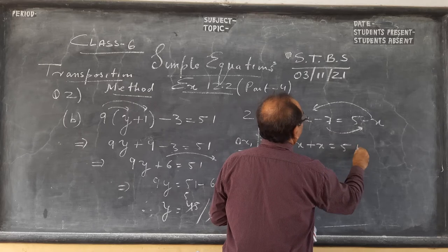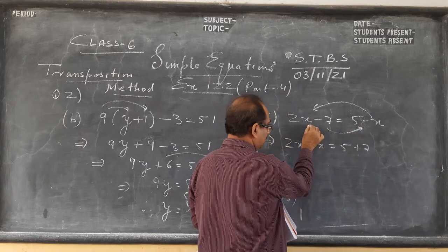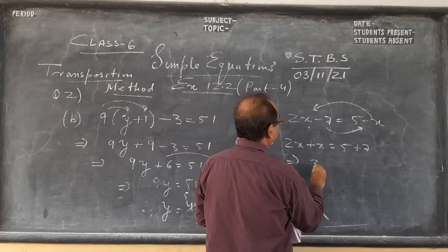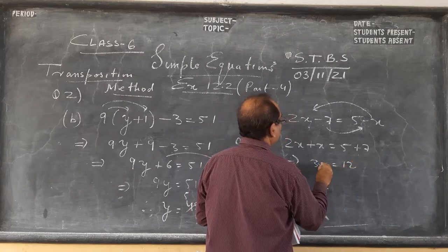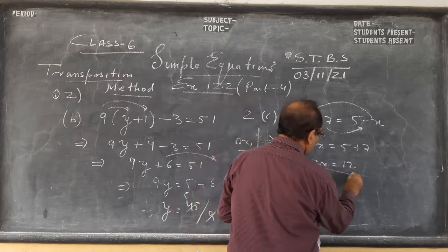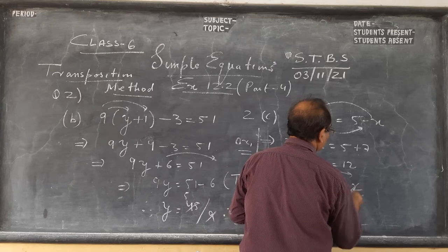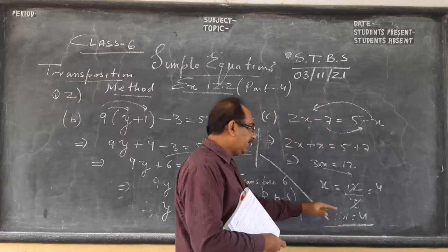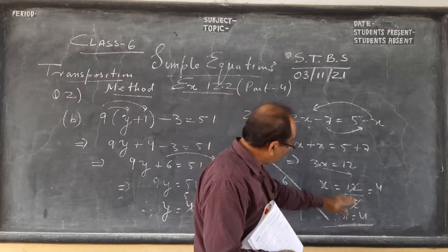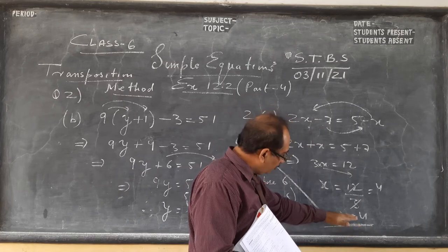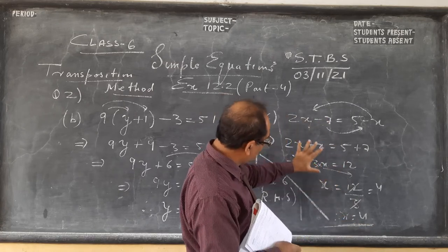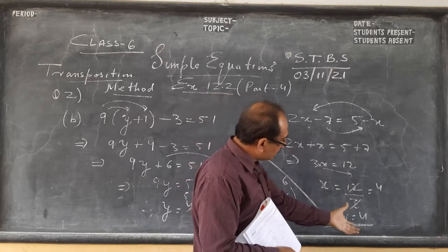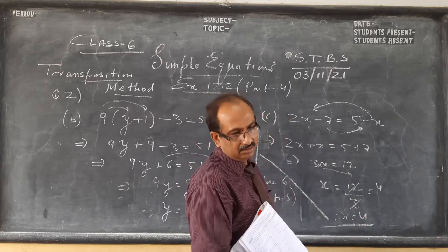7 will go to the other side with a plus sign - minus becomes plus when it crosses the equal sign. So on this side we get 3x and on this side we get 12. There is a hidden multiplication sign: multiplication becomes division, so 3 goes down and we get x as 4. Always write the answer neatly and cleanly at the end so your teacher can easily find it when correcting.